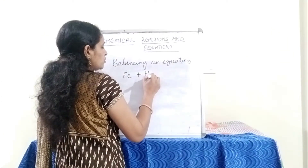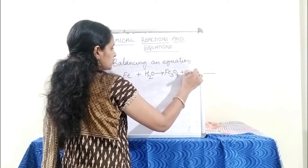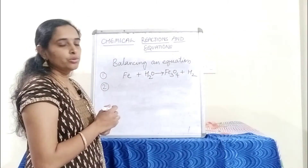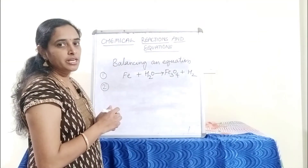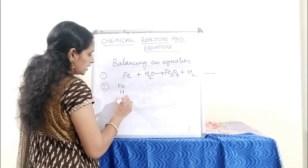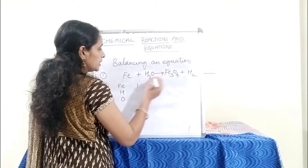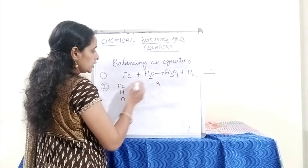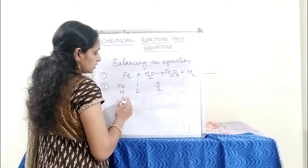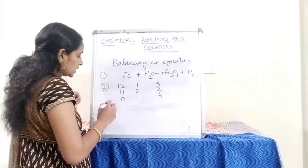The equation is: Fe + H2O → Fe3O4 + H2. This is Step 1. In Step 2, we note down the number of atoms of each element on both sides. The elements present are iron, hydrogen, and oxygen. On the reactant side we have 1 iron; on the product side we have 3. Hydrogen on the reactant side: 2; on the product side: 2. Oxygen on the reactant side: 1; on the product side: 4.